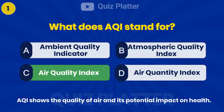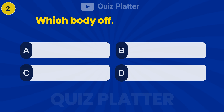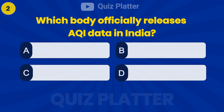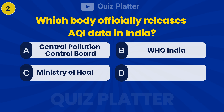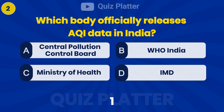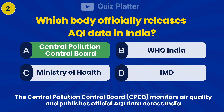Answer: C — Air Quality Index. Which body officially releases AQI data in India? Answer: A — Central Pollution Control Board.